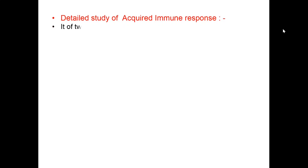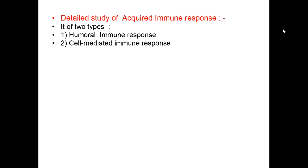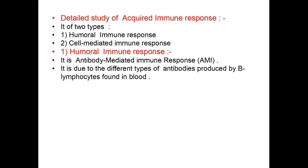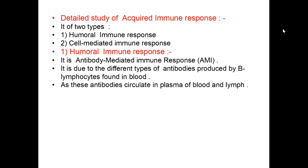Let us study in detail the acquired immune response. It is of two types. First is humoral immune response — it is an antibody-mediated response, also known as AMI. It is due to the different types of antibodies produced by B lymphocytes found in blood. As these antibodies circulate in the plasma of blood and lymph, it is hence called humoral immune response.